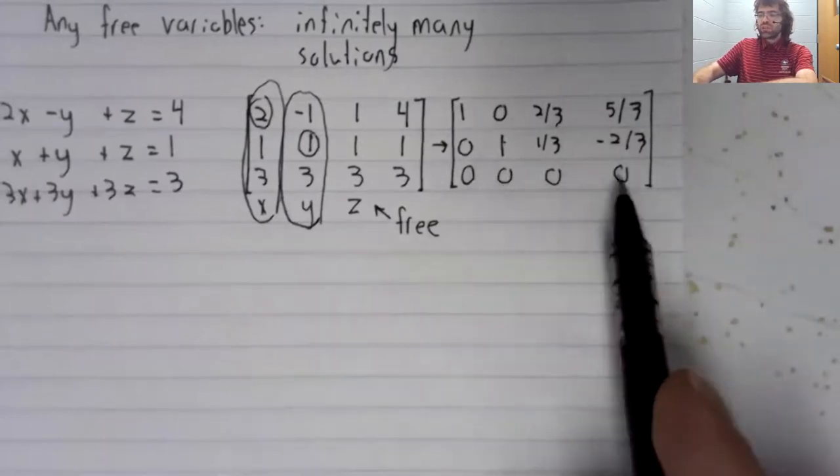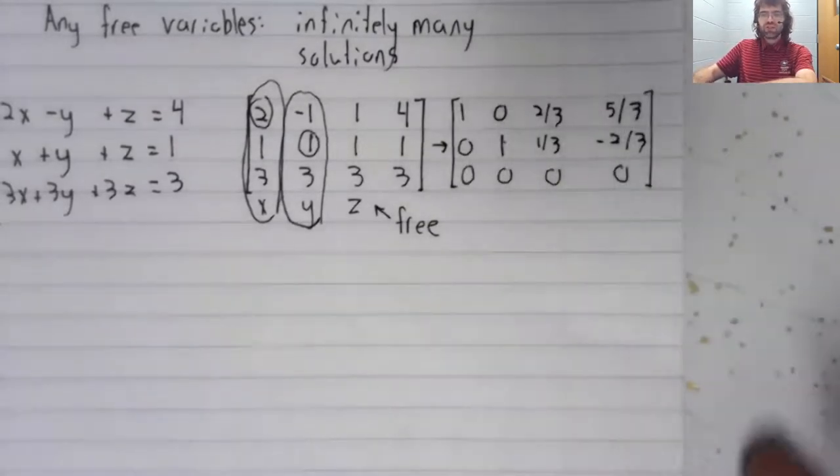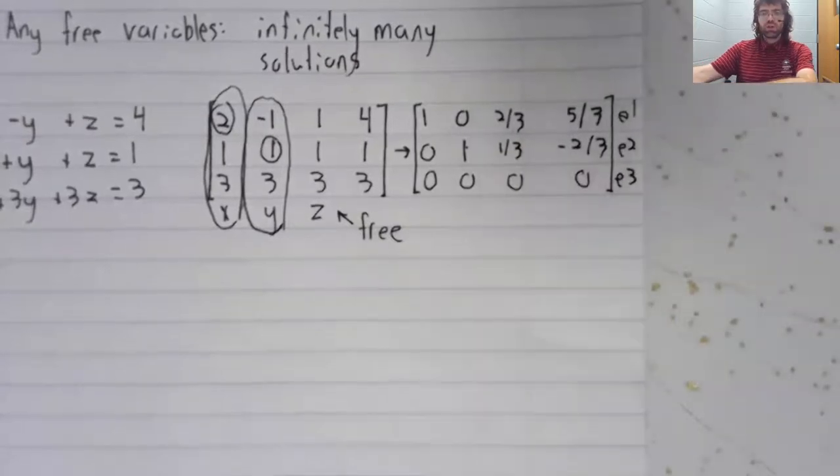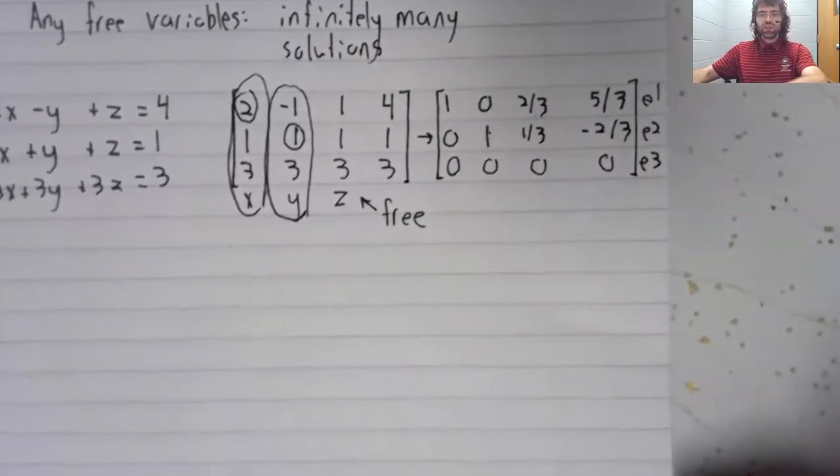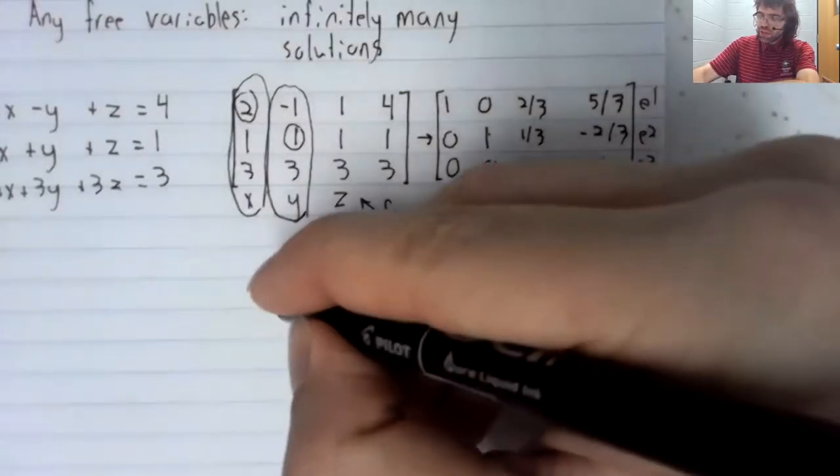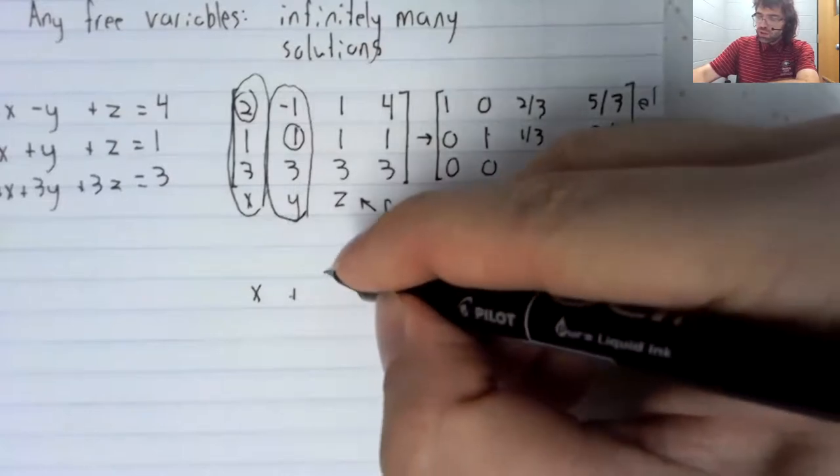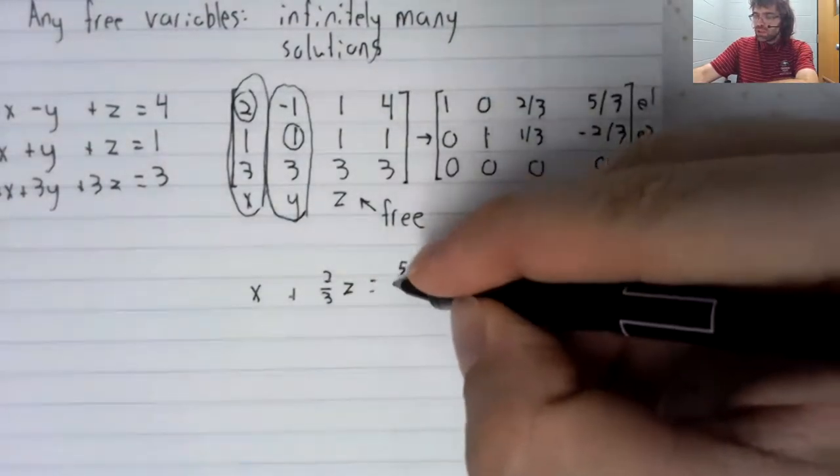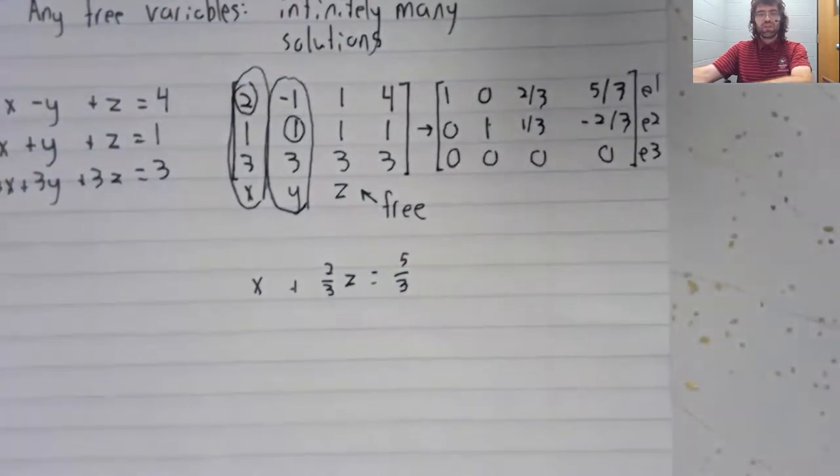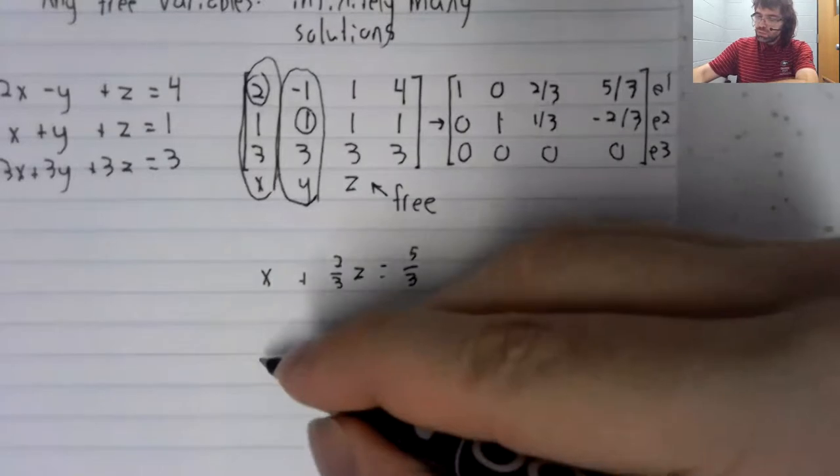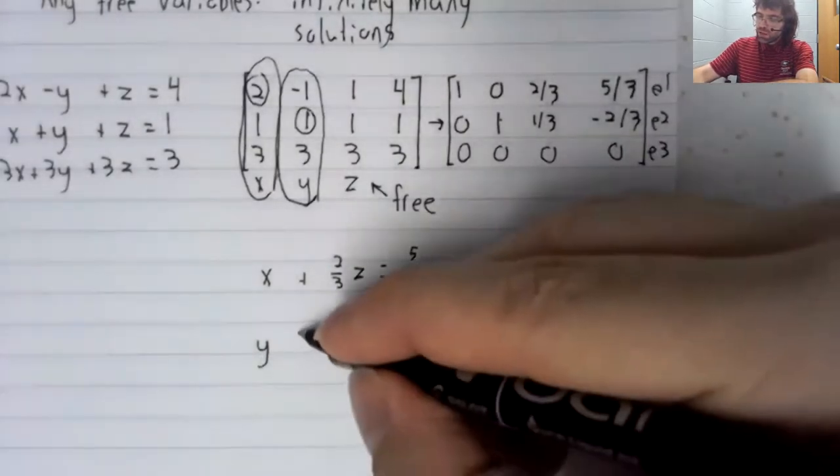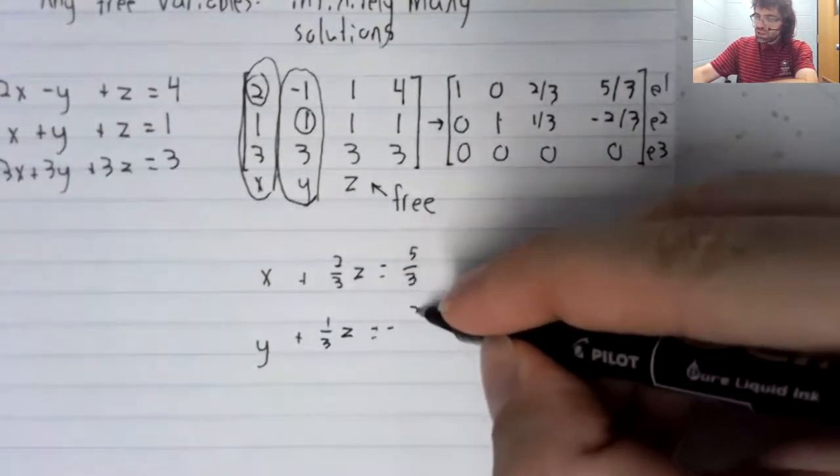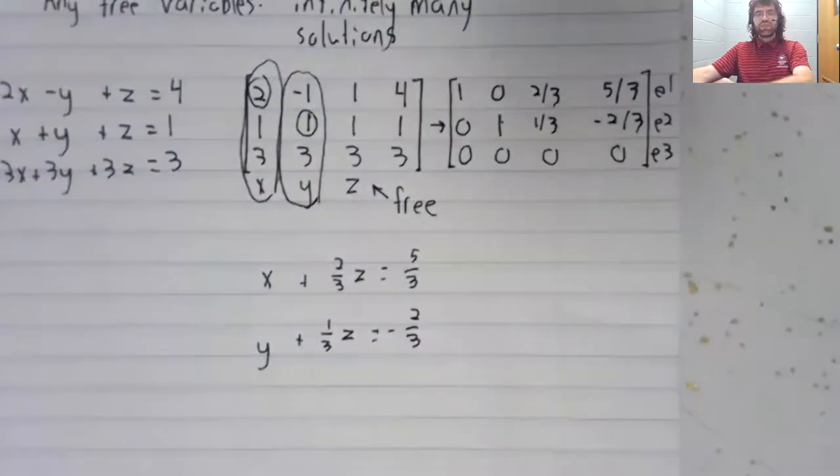Let's look at what each of these rows is telling us. Remember that each row here corresponds to an equation. The first row: x plus two thirds z equals five thirds. Second row: y plus one third z equals negative two thirds.